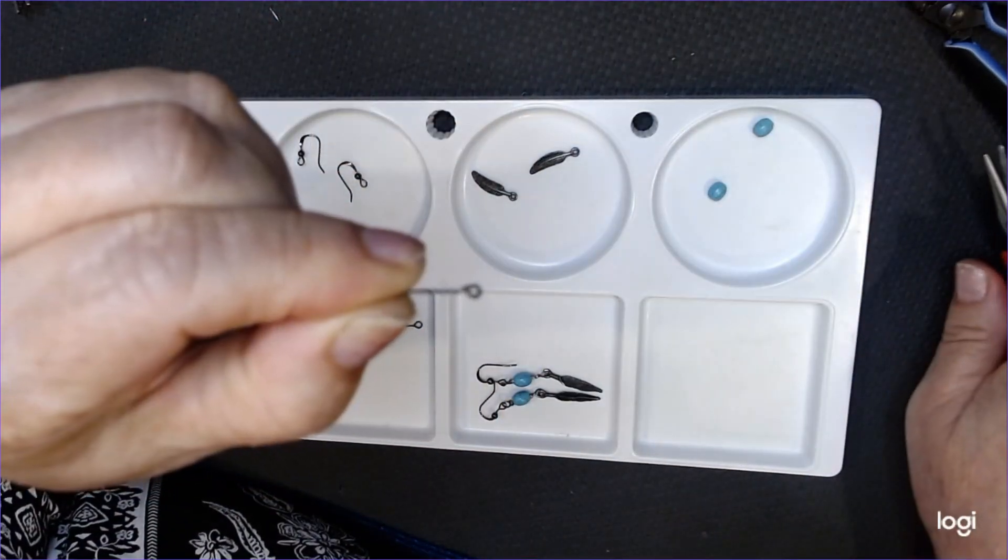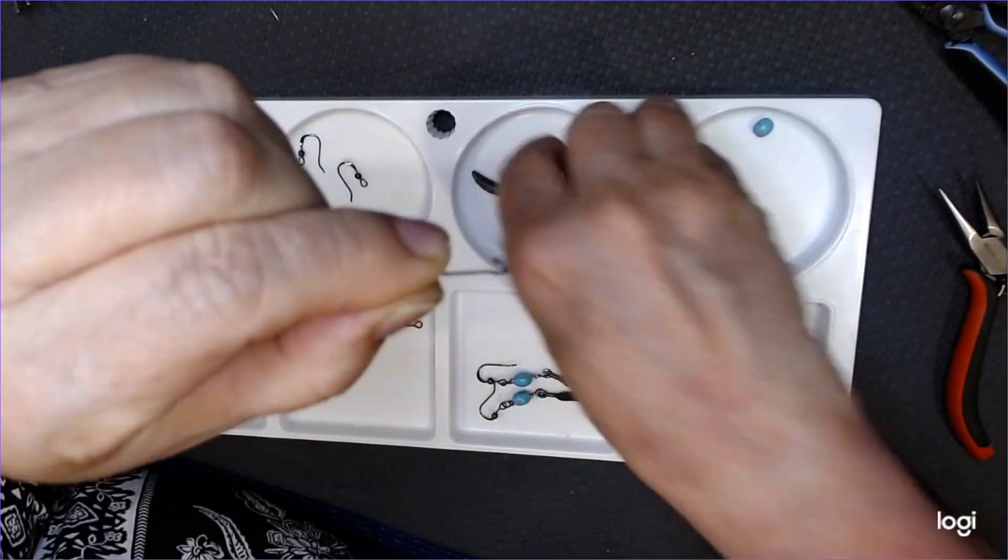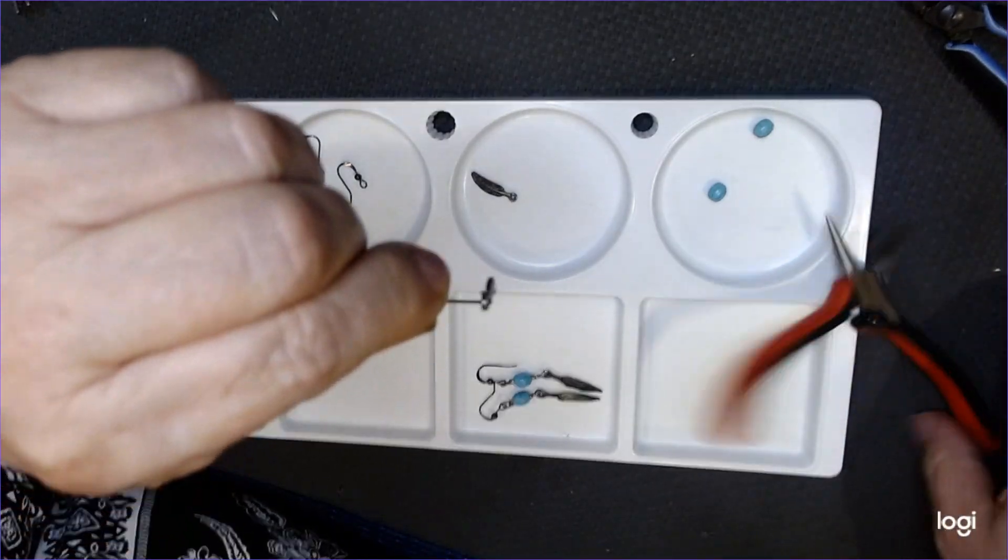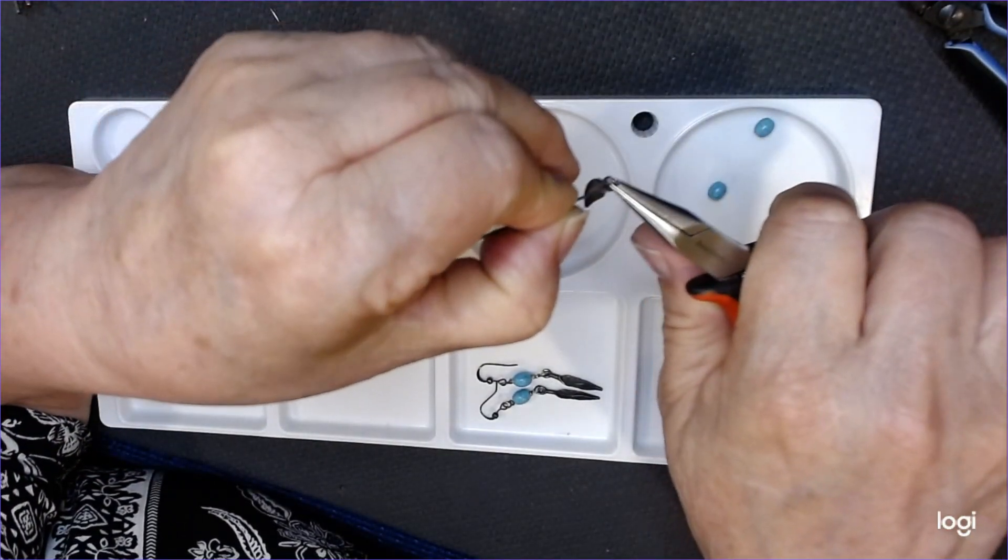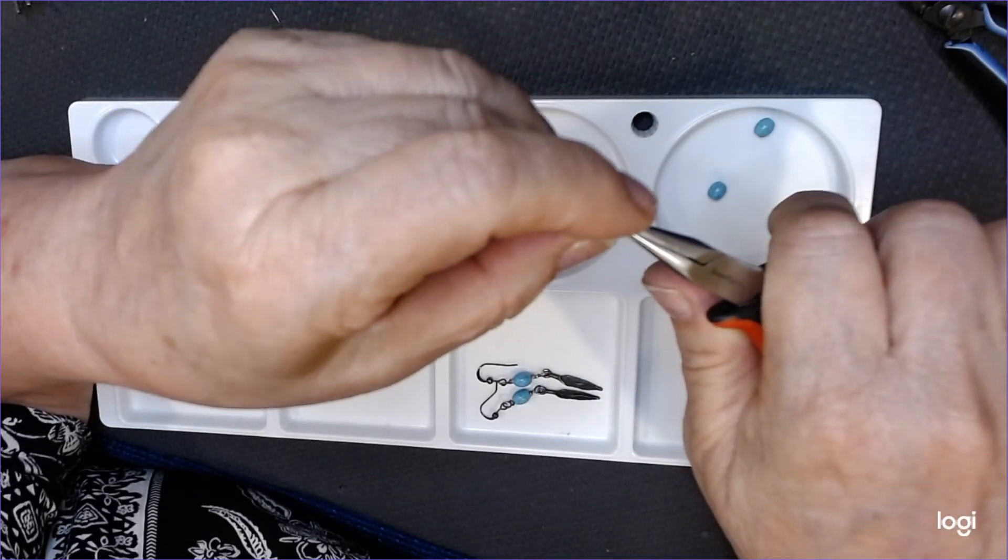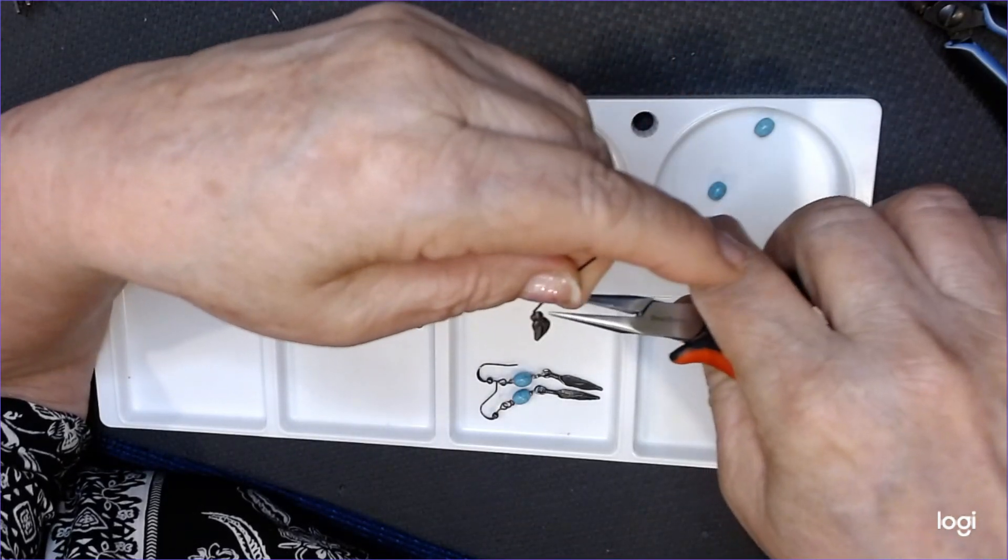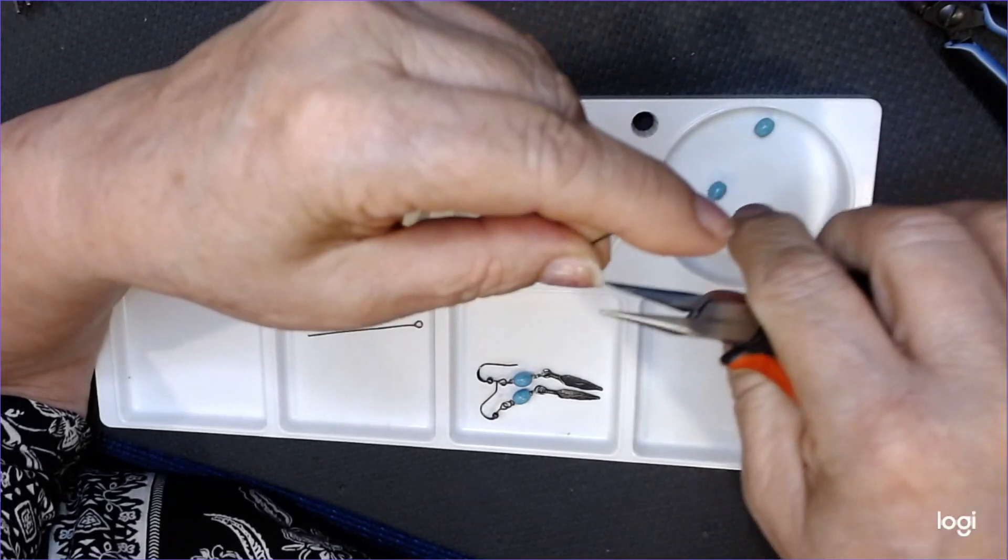And I'm going to stick on one of these feathers, just like that. You could put any kind of little ornament on there, or any kind of charm that you would like to put on there. Maybe your daughter has a favorite character and wants to put that on there. You could do that.